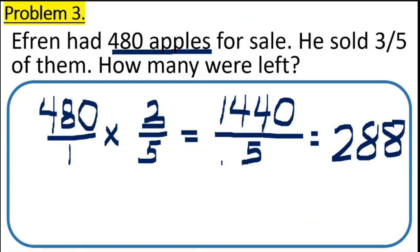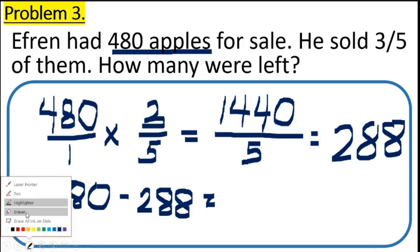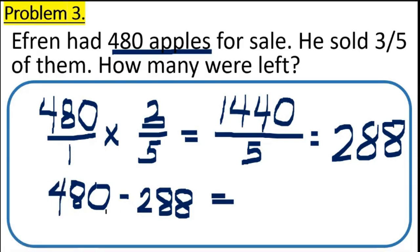Now, the question is how many apples were left? We need to subtract now. So, 480 minus 288. We have 480 minus 288 is 192. So, we have now 192 as the number of apples left to Efren. Mayroon pa siyang 192 apples na kailangan niya i-benta.